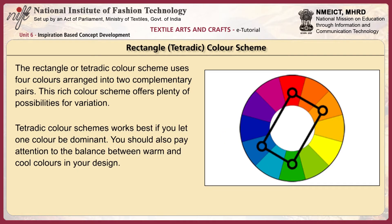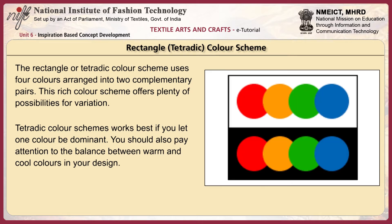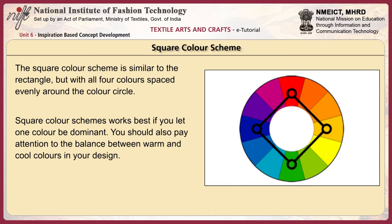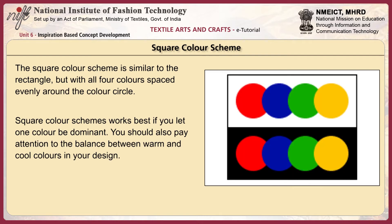The rectangle, or tetradic, color scheme uses four colors arranged into two complementary pairs. This rich color scheme offers plenty of possibilities for variation, but works best if you let one color be dominant and pay attention to the balance between warm and cool colors. The square color scheme is similar to the rectangle, but with all four colors spaced evenly around the color circle, and similarly works best with one dominant color and balanced warm and cool tones.